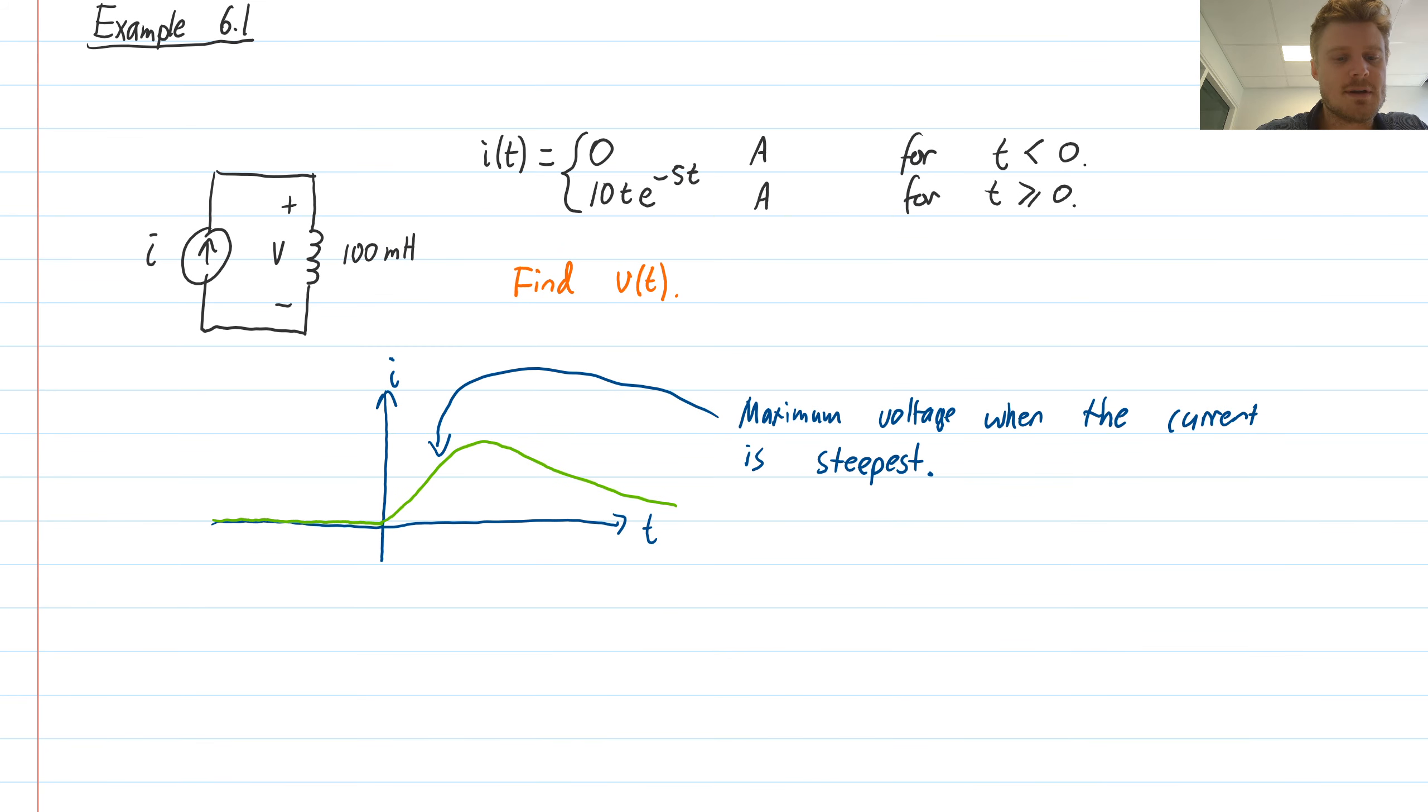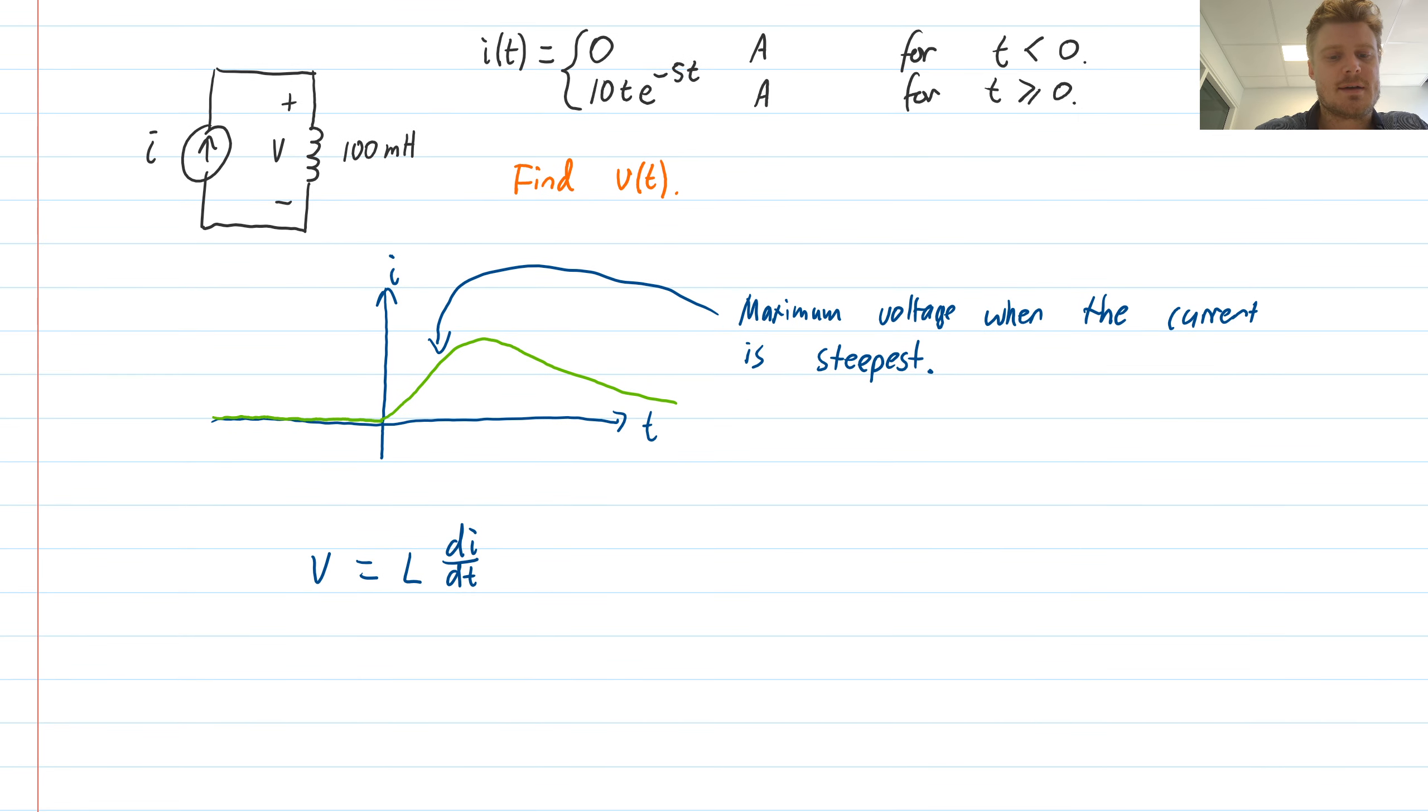Let's go ahead and solve this question. The voltage on an inductor is L times di/dt, so I will need to calculate the derivative of my current expression. I need di/dt, which is going to be the derivative of my expression: 10 times t times e to the minus 5t.